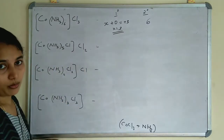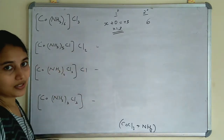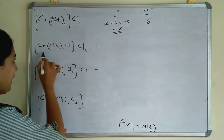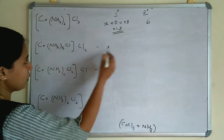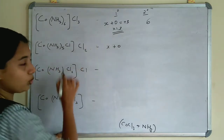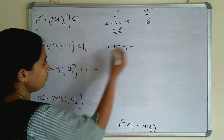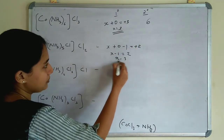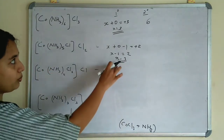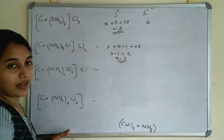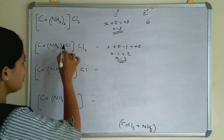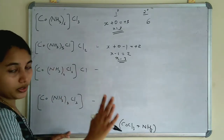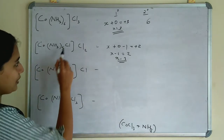In the second compound, let's find the primary valency. Let the oxidation number be X. Then X + 0 (for NH₃) + (−1) for Cl = +2. So X − 1 = 2, therefore X = 3. Here also primary valency is 3. And secondary valency is the coordination number — in the coordination sphere, 5 ammonia and 1 chlorine are present, so 5 + 1 = 6. Secondary valency is 6.